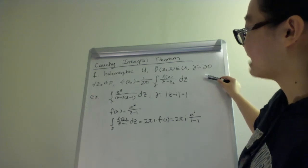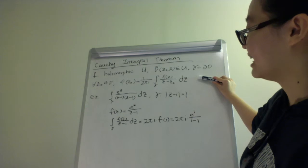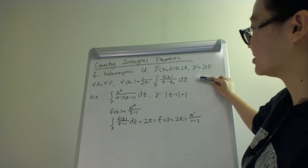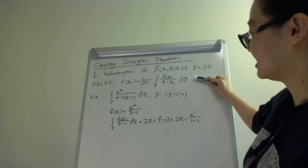for any z0 inside d, f of z0 equals 1 over 2 pi i times the integral of f of z over z minus z0 dz on gamma.